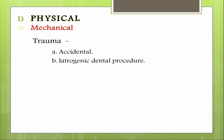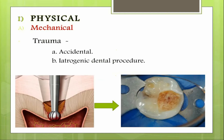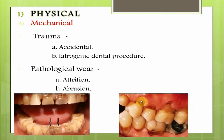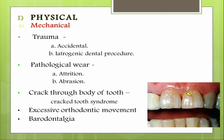Trauma can also be iatrogenic; for example, when removing deep caries the bur may accidentally expose the pulp, causing a pinpoint pulpal exposure. Another reason is pathological wear such as deep attrition or abrasion resulting in exposure of the pulp. Next is cracked tooth syndrome, which is a deep crack through the body of the tooth through which bacteria from saliva may enter the pulp.